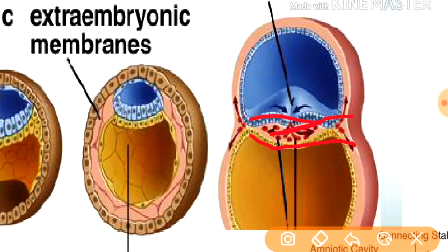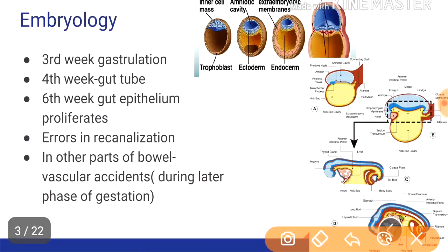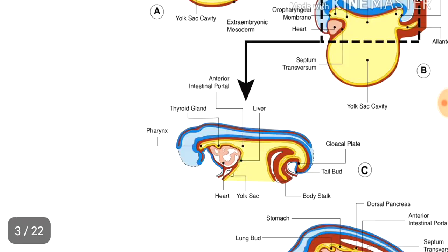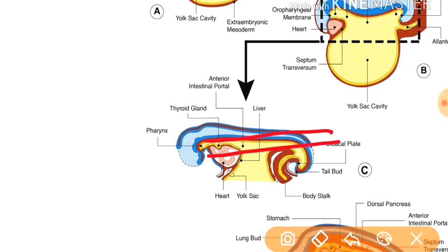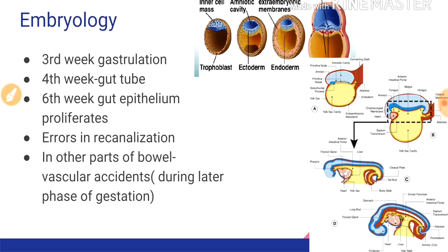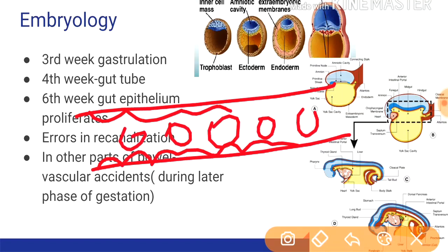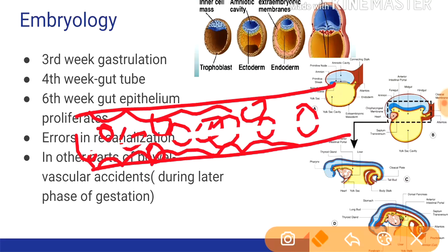The endoderm, by the fourth week of gestation, becomes the gut tube. Once the gut tube is formed, by around the sixth week of gestation, the gut epithelium proliferates, fills the lumen, and after that, re-canalization occurs — re-canalization of the lumen occurs.